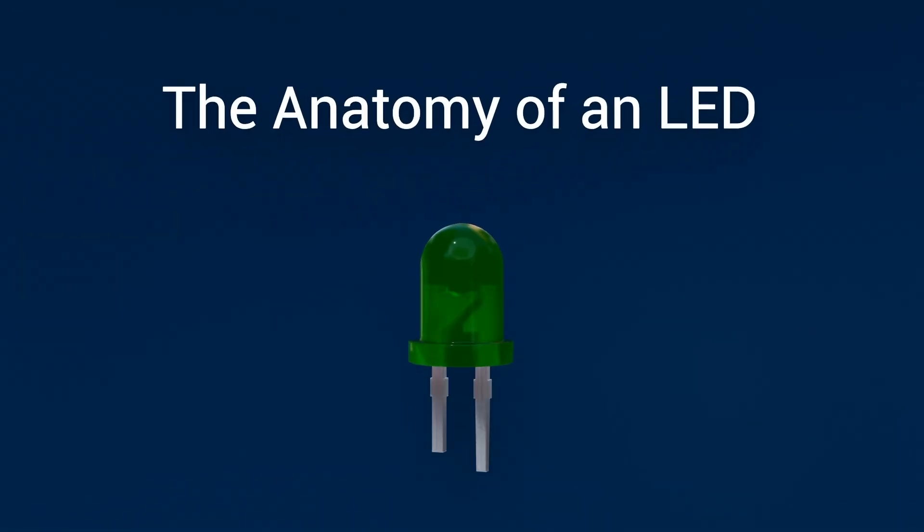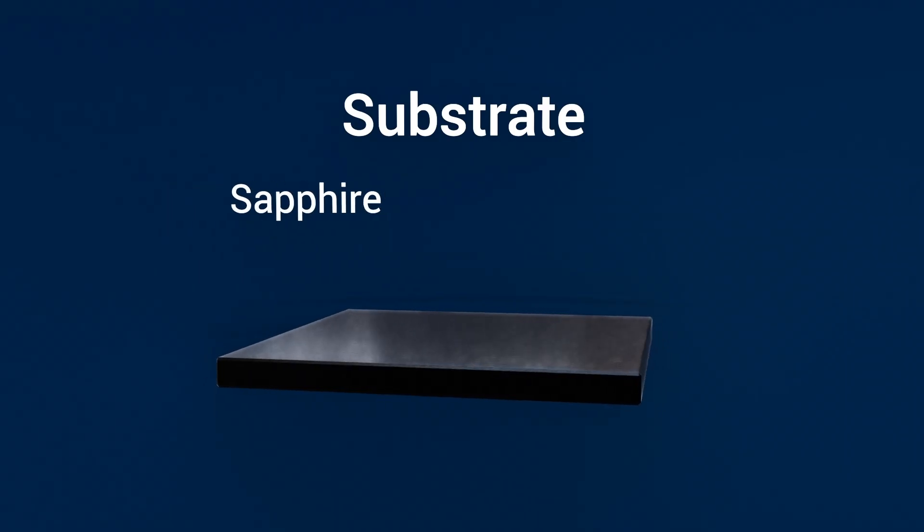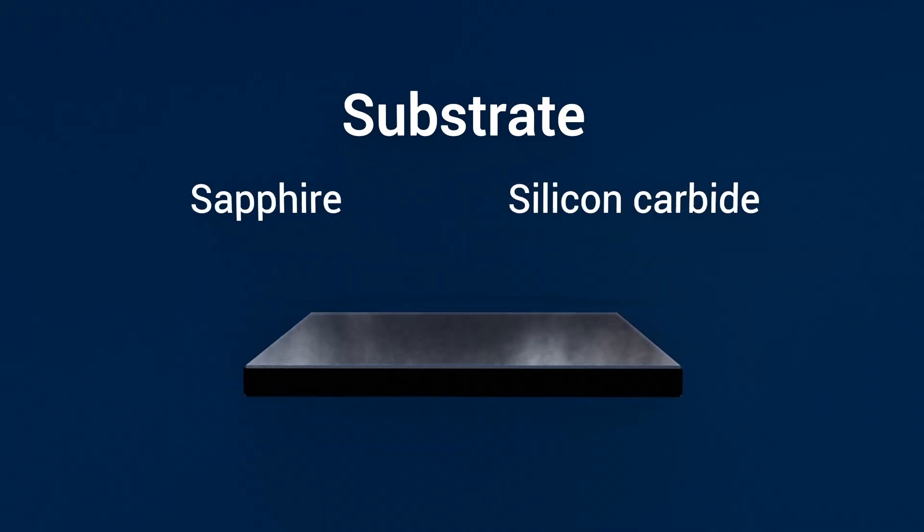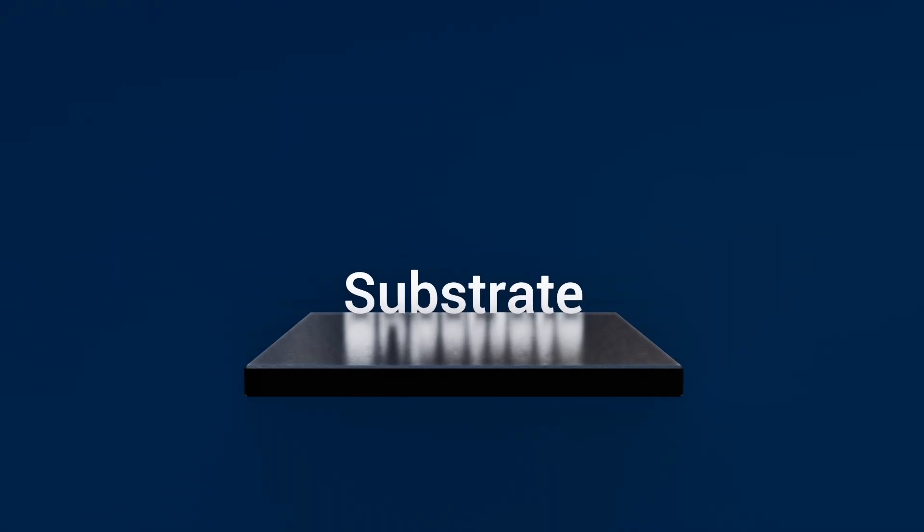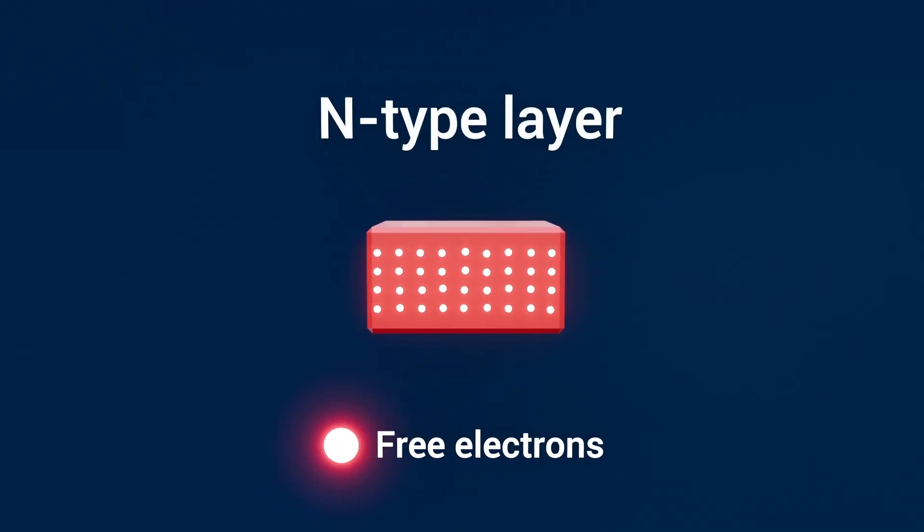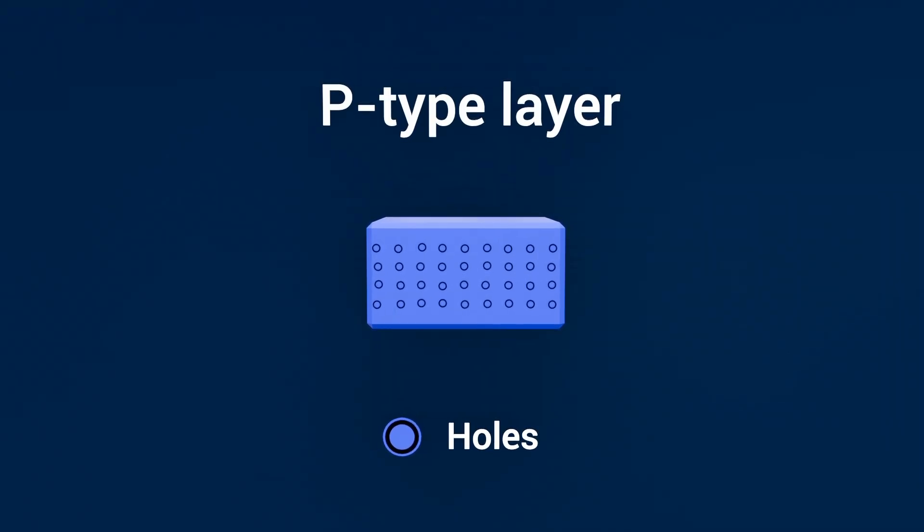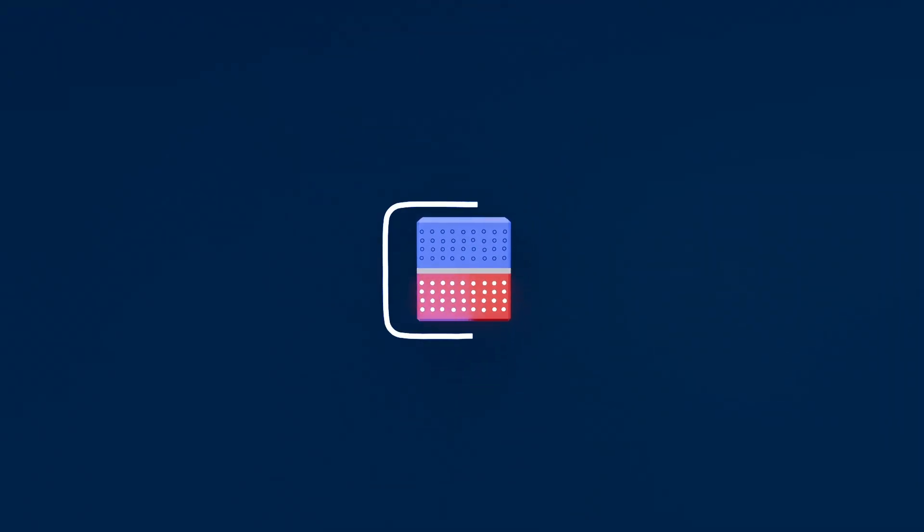The anatomy of an LED. At the very base, we have the substrate, often sapphire or silicon carbide. This rigid platform supports everything above it. Grown directly on the substrate are the epitaxial layers, first the n-type layer, the source of our free electrons or charge carriers, then the p-type layer, full of holes, where electrons can go. These crystalline layers are meticulously deposited atom by atom to form the semiconductor junction.